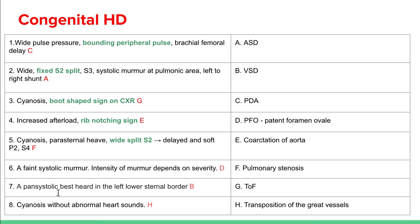A pan-systolic murmur best heard at the left lower sternal border is classic for ventricular septal defect (VSD). Cyanosis without any abnormal heart sounds is transposition of the great vessels — there is no valvular disease and no septal holes; the aorta is where the pulmonary artery should be and vice versa, causing extreme cyanosis without abnormal heart sounds.